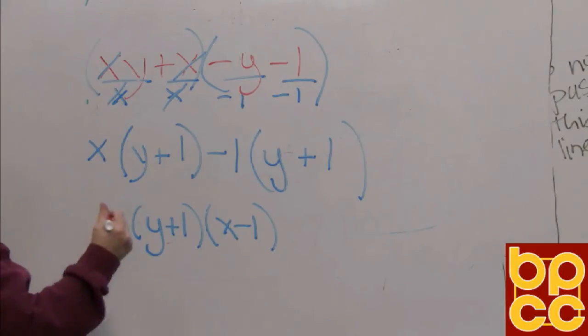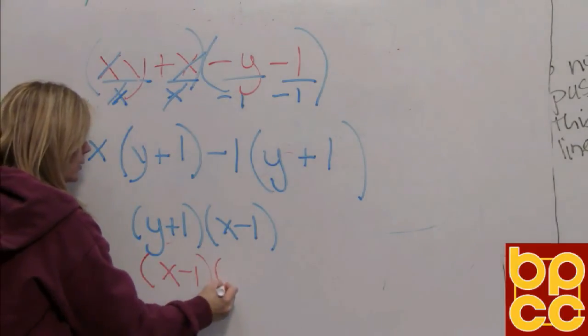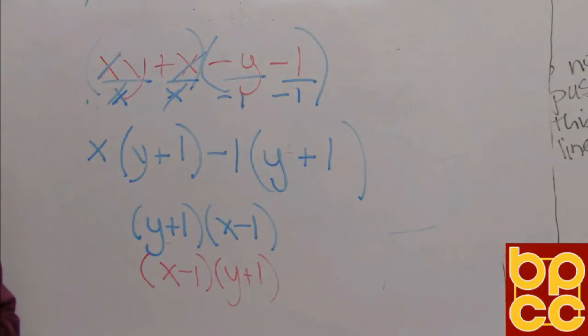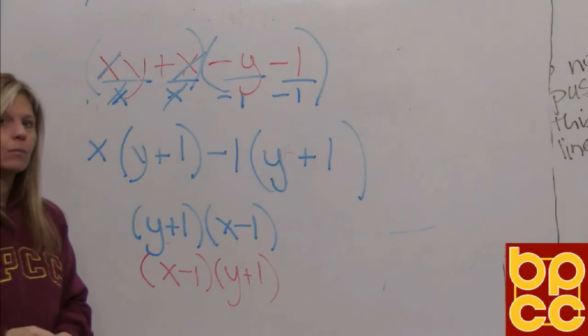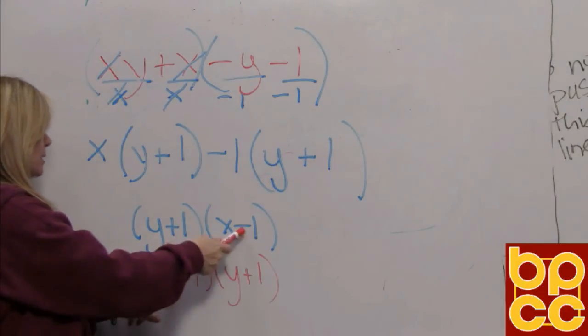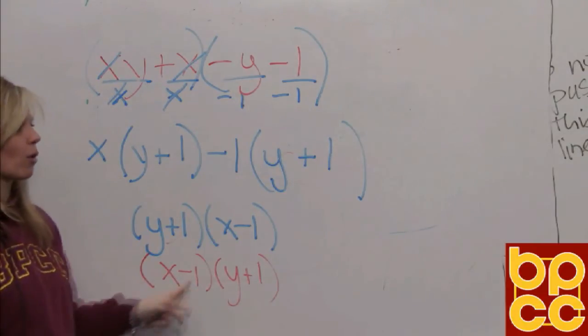Now, let's just make sure we understand something. If somebody wrote this answer as x minus 1 times y plus 1, is that a different answer or is it the same answer? Well, it's the same answer. They both have a y plus 1. They both have an x minus 1. All you did was rearrange the order of multiplying.